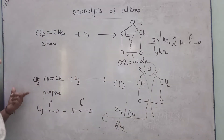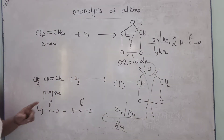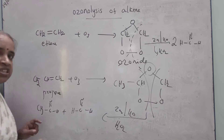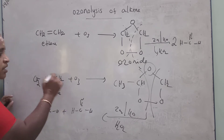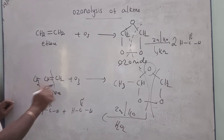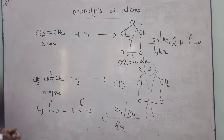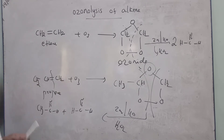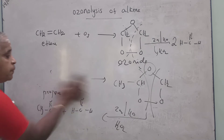So propene gives one molecule of formaldehyde and one molecule of acetaldehyde as products. You can identify the reactants and products from the reaction scheme.